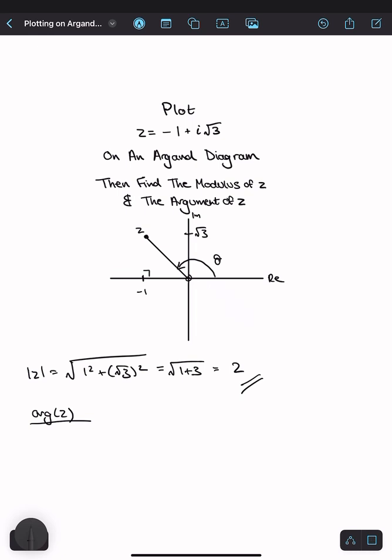So to find theta, we can just find this angle, let's call this alpha. And because we know that it's measured in radians, and that this angle is pi, to find theta, we can do pi minus alpha.